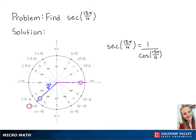Cosine correlates to the x-coordinate on the unit circle. So 1 over cosine of 13π over 4 is equal to 1 over negative square root of 2 over 2.